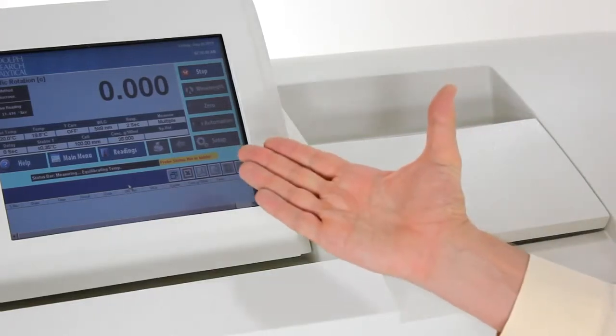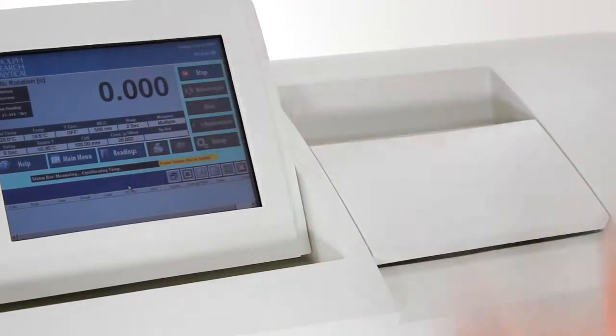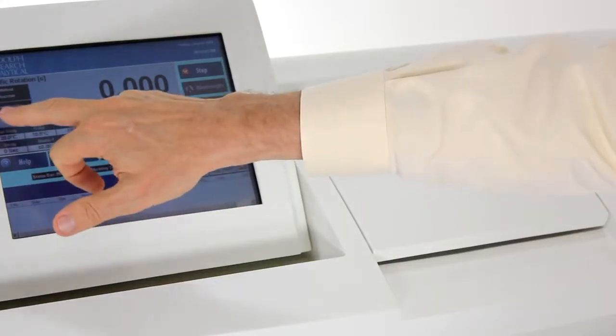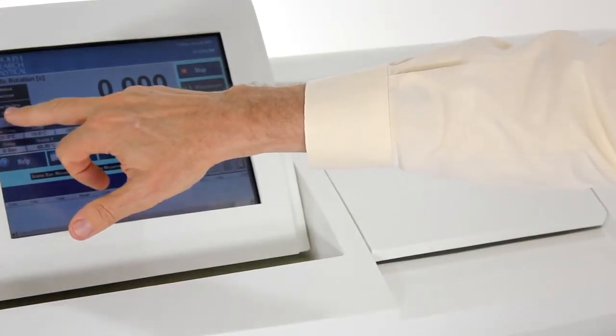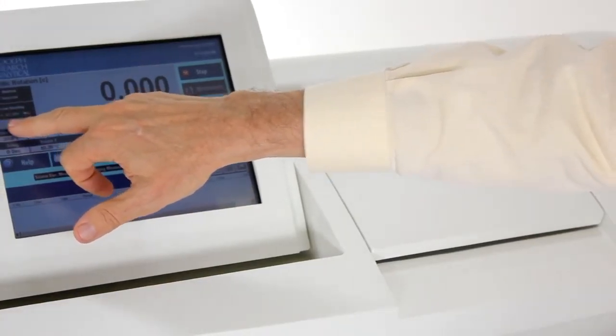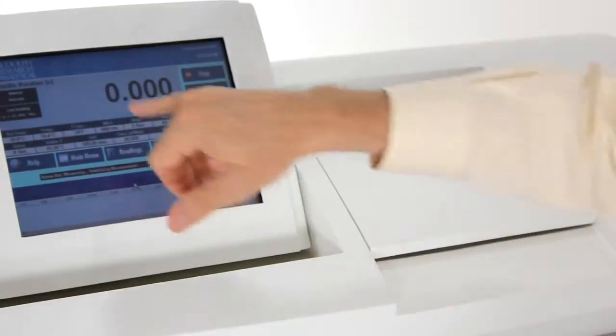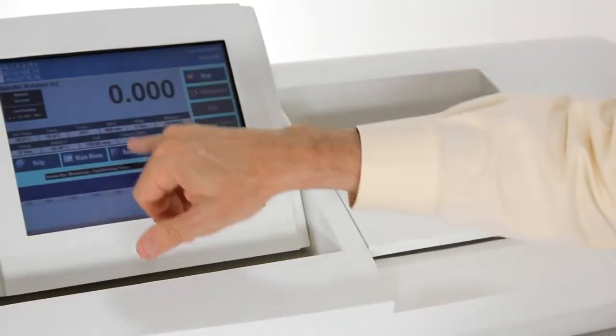When the sample is stable at the required temperature it will measure. It will measure the optical rotation and display this under the live reading. It will then calculate the specific rotation using the formula within the USP and display on the main screen. In this case we're just looking at the screen.